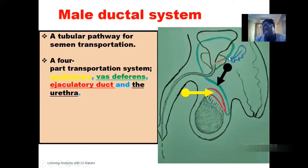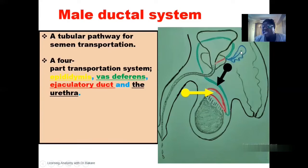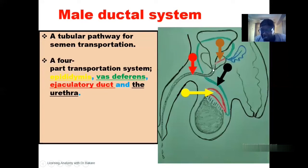In the pelvic cavity, the vas deferens finally joins with the duct of the seminal vesicle. This is the seminal vesicle, one of the accessory organs of the male reproductive system, along with the prostate gland and the bulbourethral gland. The secretion from the seminal vesicle is released through the duct of the seminal vesicle, which then unites with the vas deferens to form the ejaculatory duct, highlighted in red, after which the semen is emptied into the urethra.